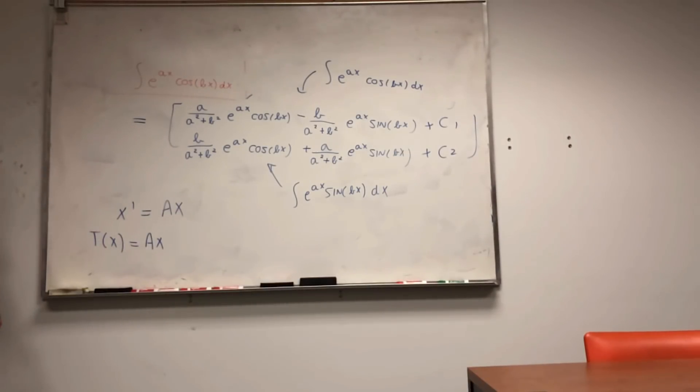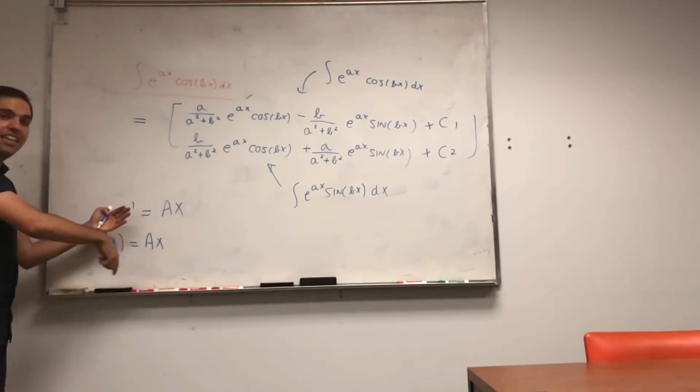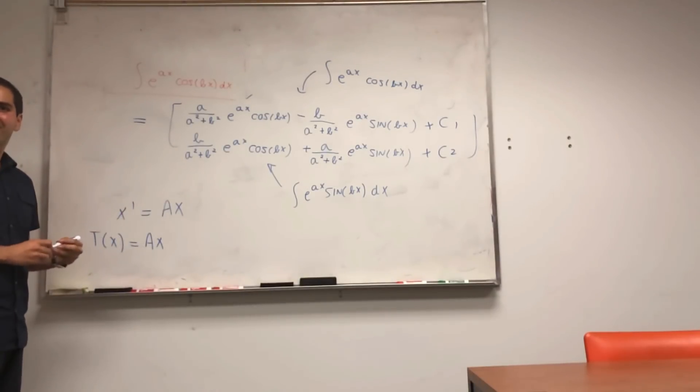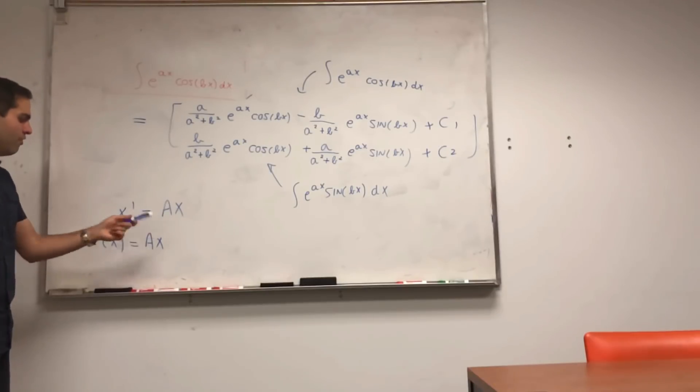And that would only happen if in fact you can solve tx equals to ax, which gives you x prime equals to ax.